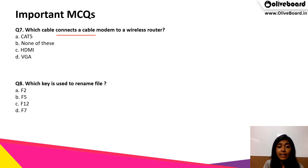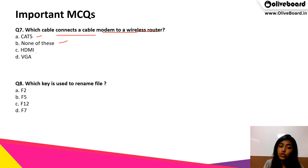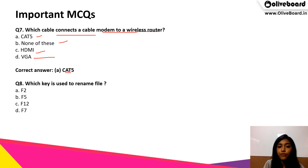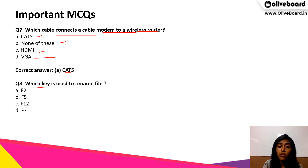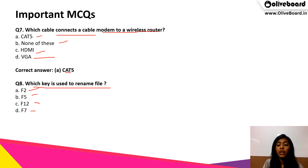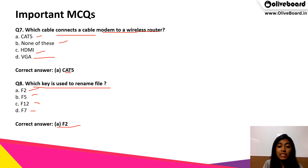Which cable connects a cable modem to a wireless router? The options are Cat5, none of these, HDMI, or VGA. The correct answer is Cat5. Next question: which key is used to rename a file? The options are F2, F5, F12, or F7. The correct answer is F2 — by using this you can rename the file you are working upon.